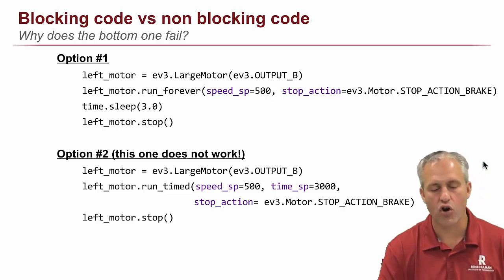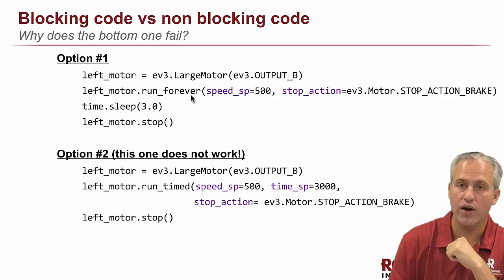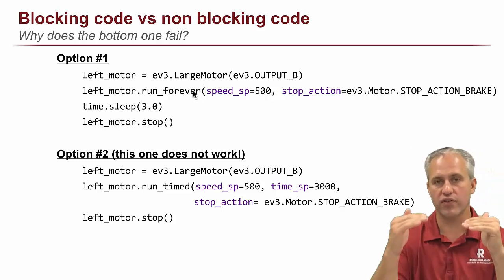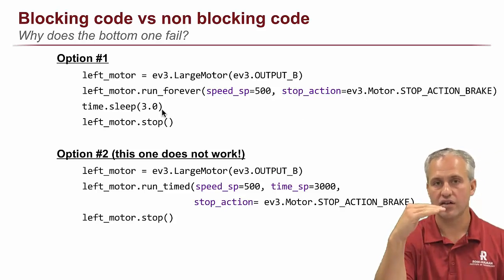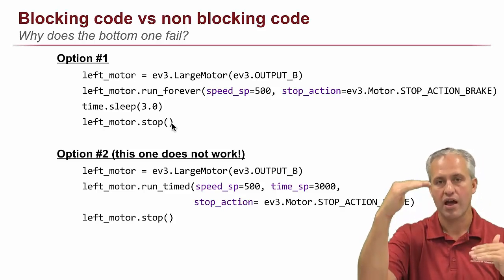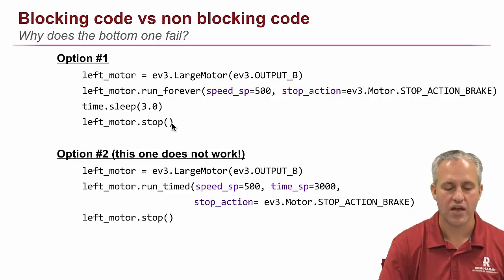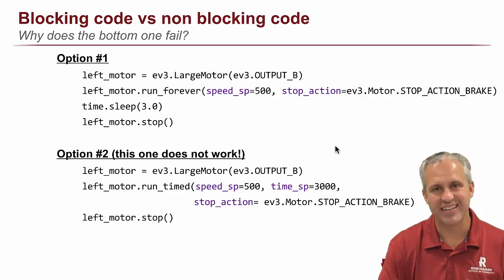Another thing I wanted to kind of harp on a little bit is this whole blocking of code execution or not. So there's kind of two options here that do things. The top one has a run forever, which of course runs and finishes instantly. And then it hits this time dot sleep. And time dot sleep is blocking, right? So nothing happens. And then your robot stops. And so your code and your robot kind of stay in line. This next one is a disaster. And I want you to see that it's a disaster.